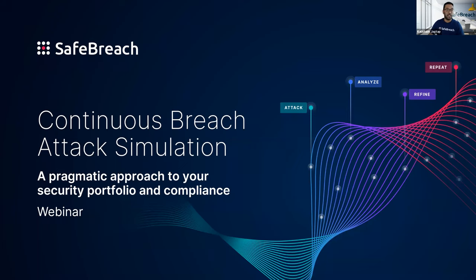Our speaker today is SafeReach CSO Avishai Avivi, who goes by Avi. He has over three decades of information security experience, having held multiple leadership roles at large enterprises including Wells Fargo, E-Trade, and Experian. His career spans multiple domains including product research and development, professional services, customer support, consulting, and strategic leadership. He holds a dual MBA from the Haas School of Business at Berkeley and Columbia University Business School, and holds certifications including CISSP, CISM, CRISC, and the Stanford University Strategic Decision and Risk Management Program.